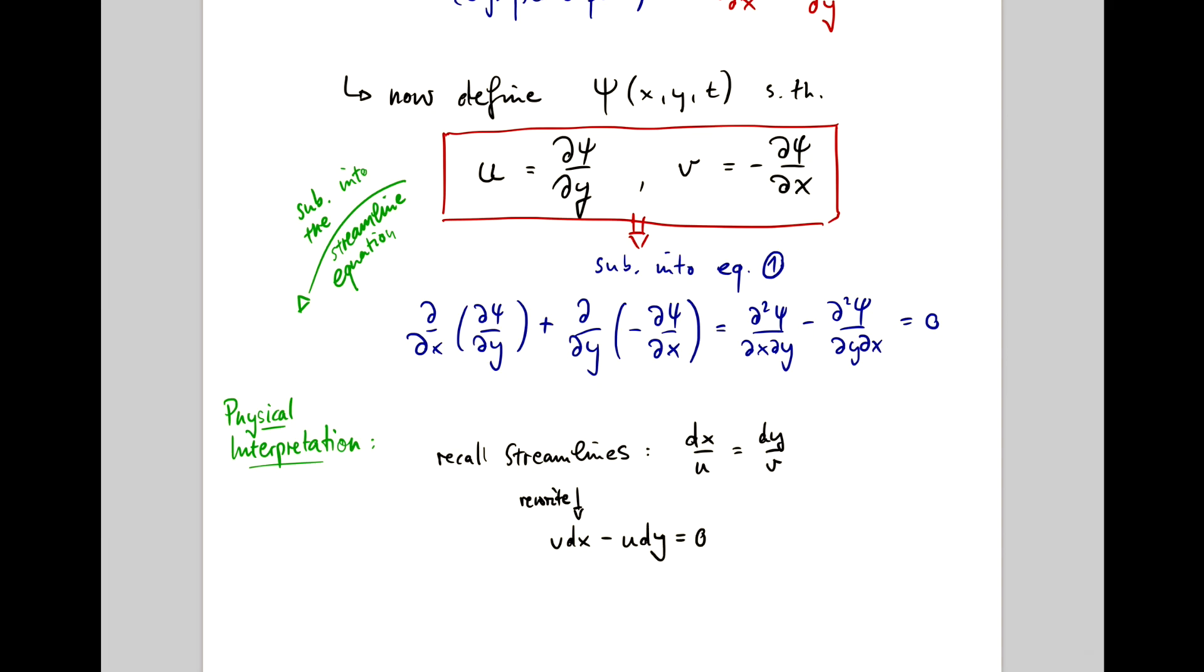So, now, if I substitute my expressions for u and v in here, I'm left with dps dx dx plus dps dy dy is zero, and the left-hand side here is just the definition of a small element dps.